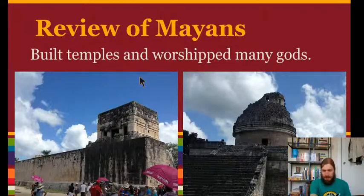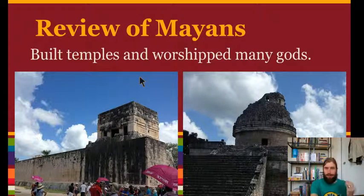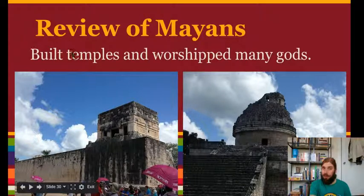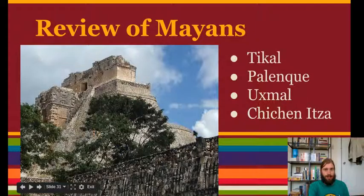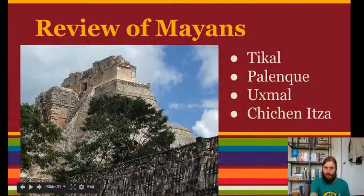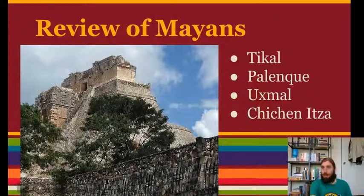Now let's review the Mayans. We talked about a lot of different parts of their culture, but let's review the most important. The Mayans built temples and worshipped many gods. They built cities out of stone — Tikal, Palenque, Uchmal, and Chichen Itza are some examples. This is a picture of Uchmal that I took. Notice that it's in the jungles. Not a lot of people actually built cities in the middle of jungles. The Mayans actually built about 50 cities.